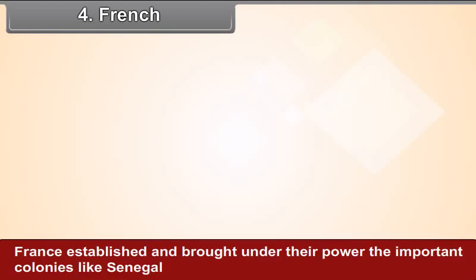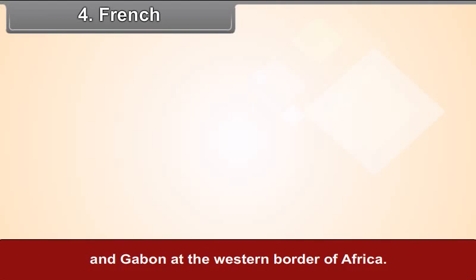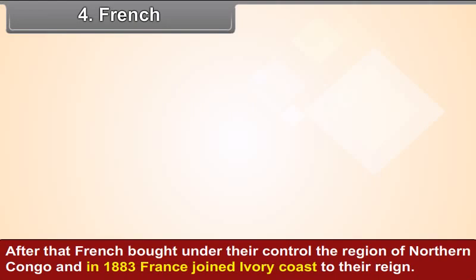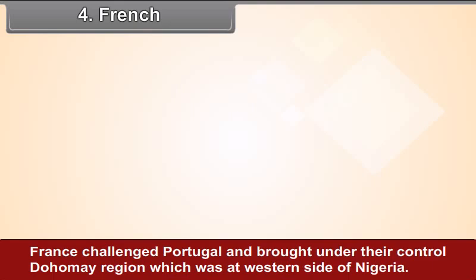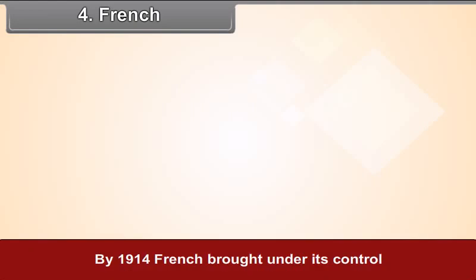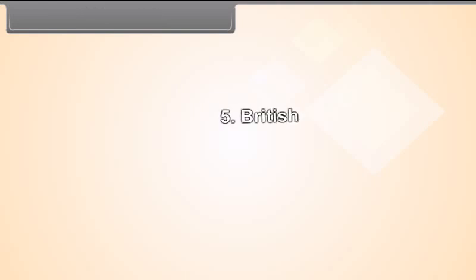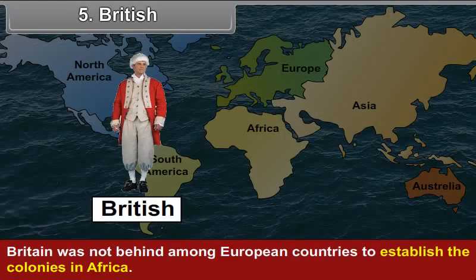Fourth, French. France established and brought under their power the important colonies like Senegal and Gabon at the western border of Africa. After that, the French brought under their control the region of northern Congo. And in 1883, France joined the Ivory Coast to their territory. France declared the Port Nova region as a safety region. France challenged Portugal and brought under their control the Dahomey region, which was at the western side of Nigeria. By 1914, France brought under its control the region from the Sahara Desert of North Africa to the West Ivory Coast and up to French Guinea.